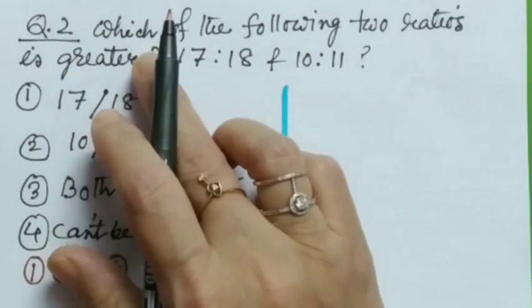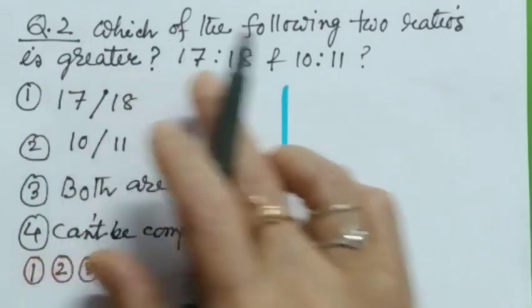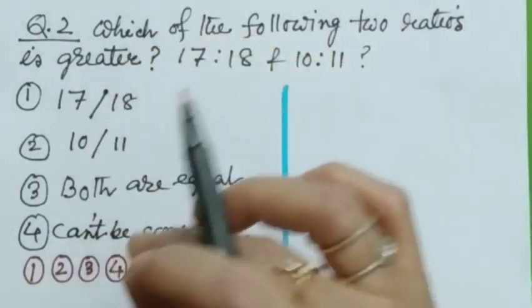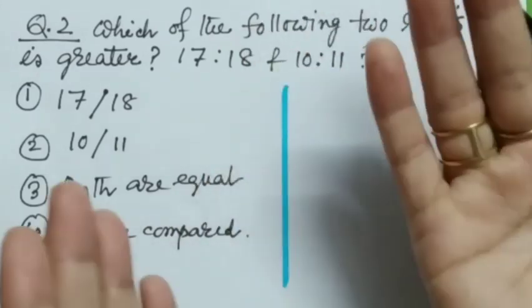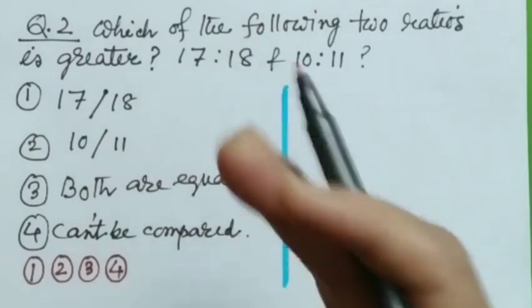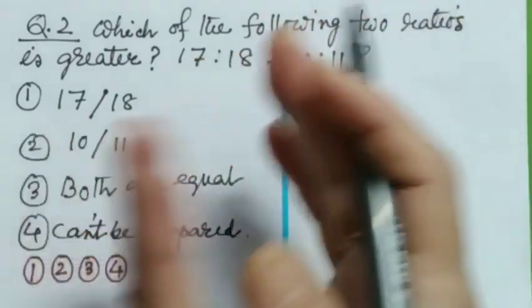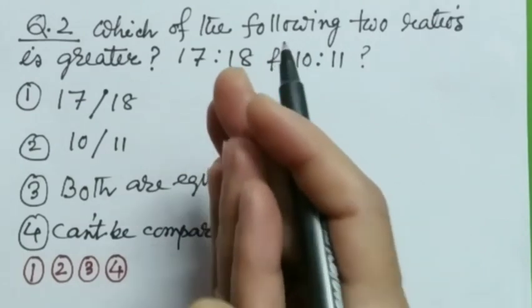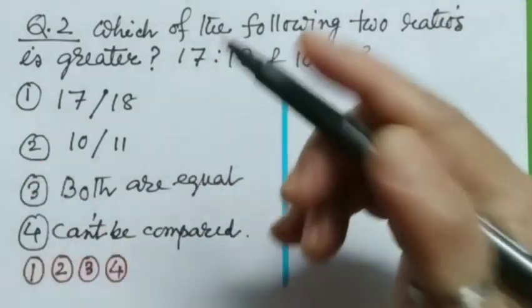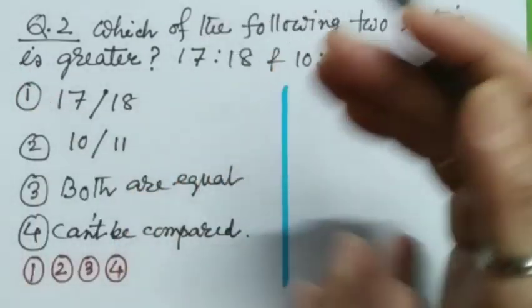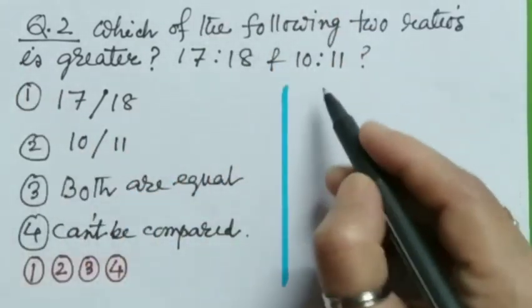Question number 2. Which of the following two ratios is greater? 17 is to 18 and 10 is to 11. 4 options are given. So naturally, equivalent fraction concept. Yes children. With equivalent fraction we all practiced it many times. The main concept of equivalent fraction is to multiply or divide both the numerator and denominator with the same number. So I am starting doing now.